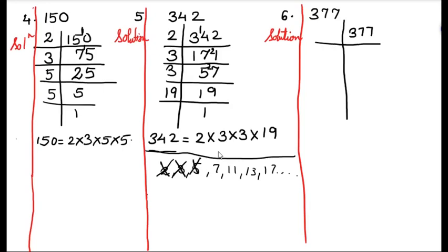Now let us try with 7. So 377 divided by 7 — 7 fives are 35, minus 2 gives 7. 7 threes are 21, minus 6. The remainder is not zero, so 377 is not divisible by 7.